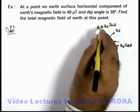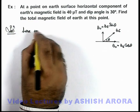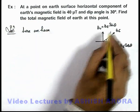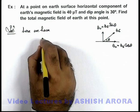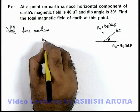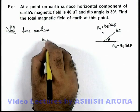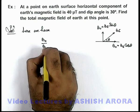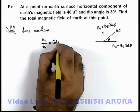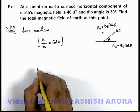Relating the two components, if we divide the two equations, we know that B_H divided by B_V is equal to cot theta. This is the relation between B_H and B_V.